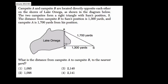We're told in this problem that campsite A and campsite B are located directly opposite each other on the shores of Lake Omega. Here's A, here's B, and they're directly opposite each other.